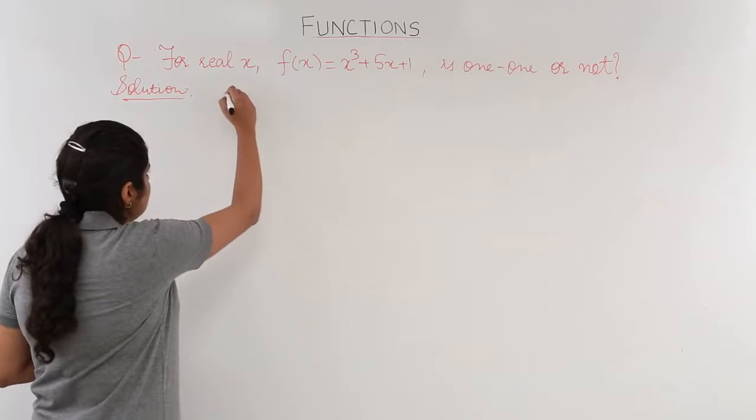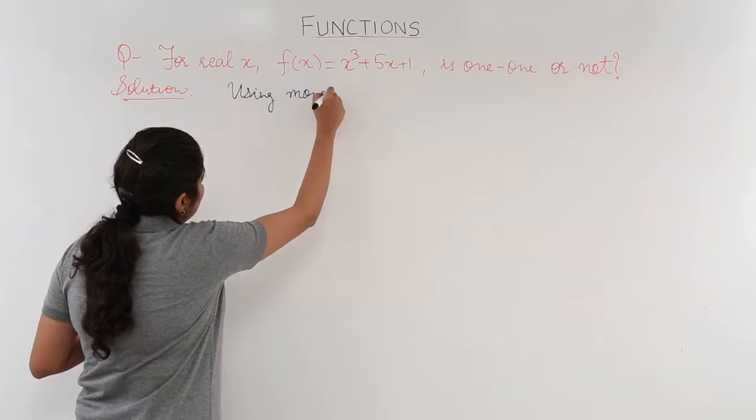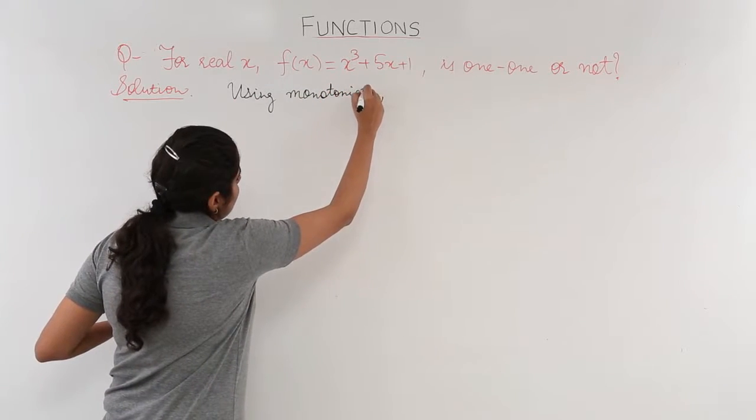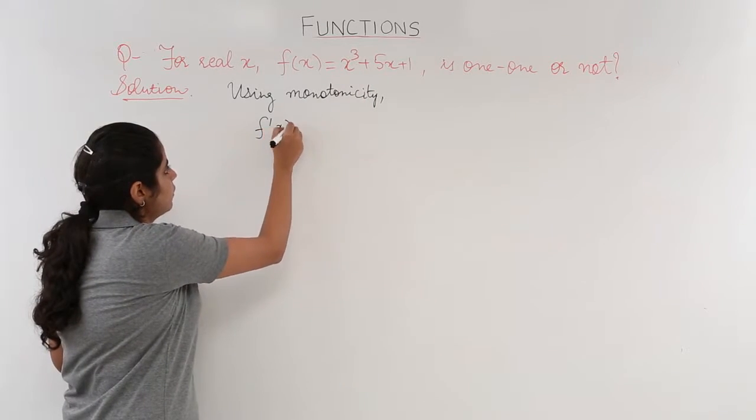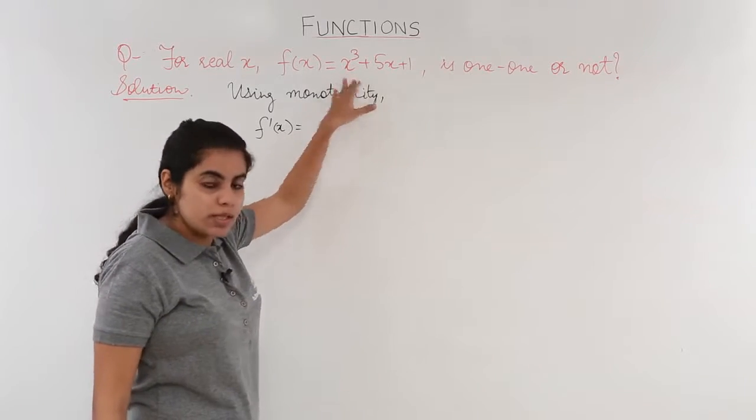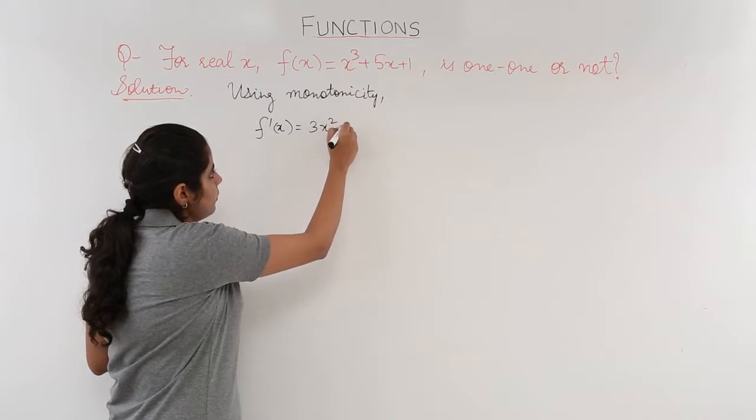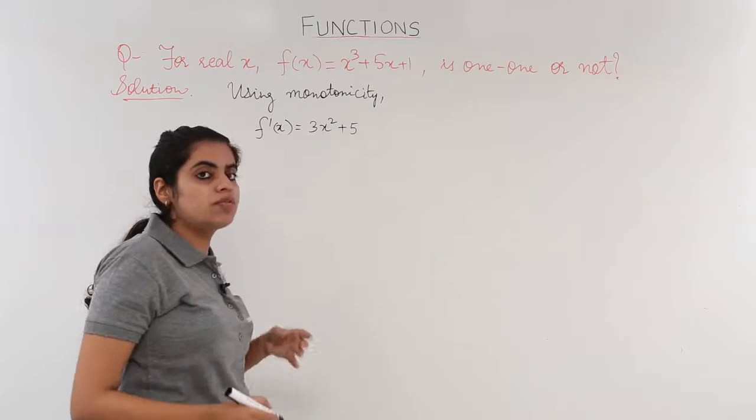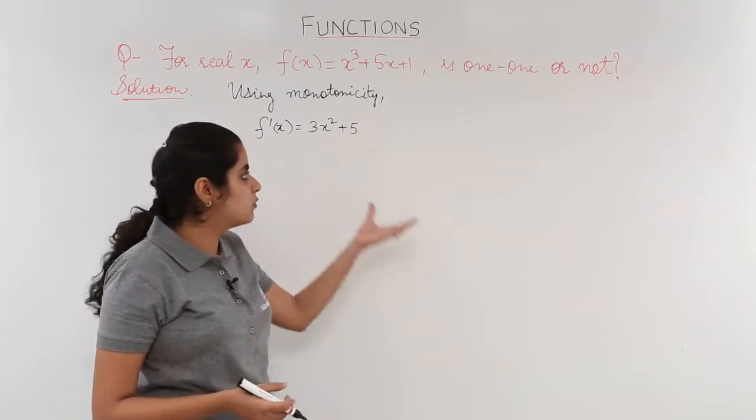So I am using monotonicity. Using monotonicity, what we do is we just find out the first derivative of this function. The differentiation of x³ is 3x². The differentiation of 5x is 5. The differentiation of 1 is 0.